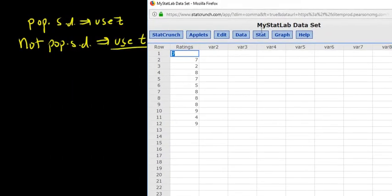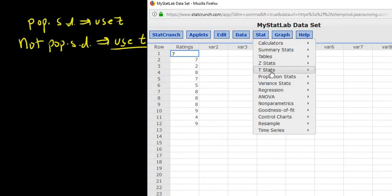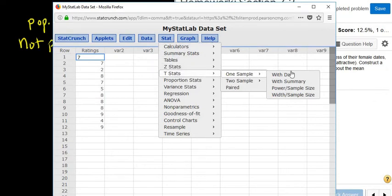And then we go to stat, t one sample, and then with data. Let me scoot it over so you can see it. So stat, t one sample with data. Okay, then you left click.